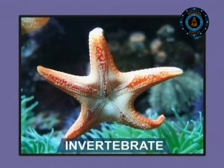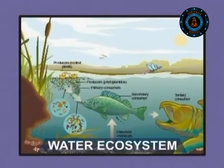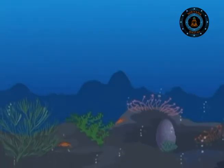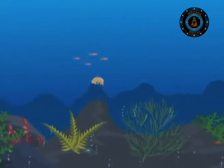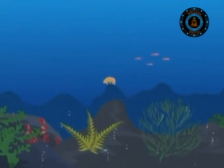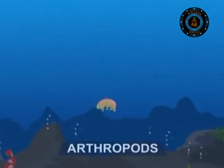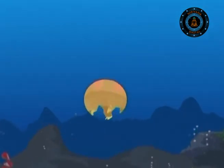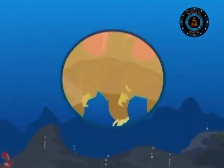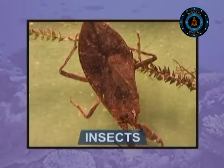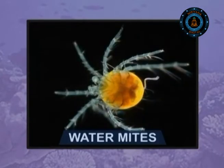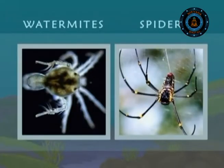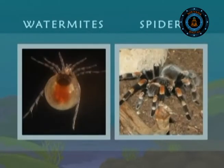Invertebrates form a vital part of all water ecosystems. While sponges and crabs are found in the sea, arthropods are common in freshwater. These arthropods are invertebrates with jointed legs and include insects, spiders and water mites. Water mites are minute relatives of spiders.